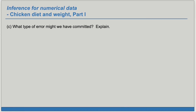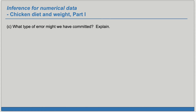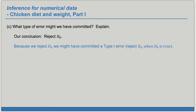Part C: What type of error might we have committed? Our conclusion was to reject H₀. So because of that, if we committed an error, we would have committed a Type 1 error — which is rejecting H₀ when H₀ is actually true.